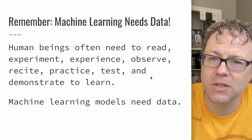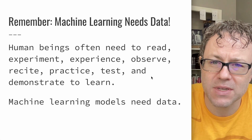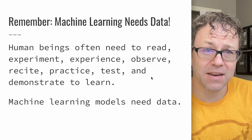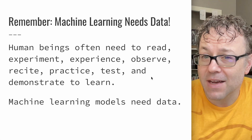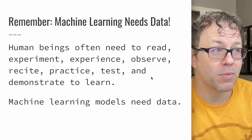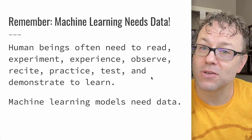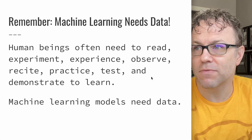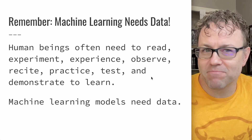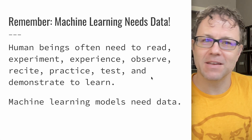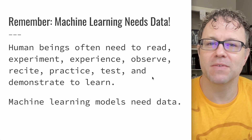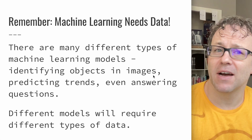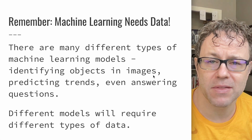But generally speaking, in machine learning and artificial intelligence, machine learning models just need data. They need to be able to analyze data and perform this analysis over and over again on a lot of different records of data, different entities of data. So there are lots of different kinds of models out there.